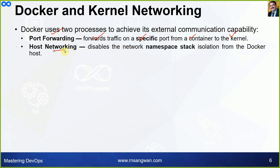The second method is host networking, which disables the network namespace stack isolation, giving you full access to the physical interface card or the MAC address of your interface card. Disabling namespace stack isolation from the Docker host gives you direct access to host networking. Here, 'host' refers to the machine where the container engine is running.